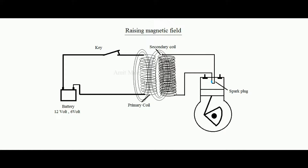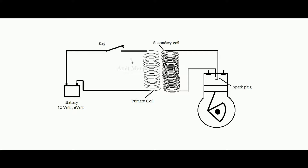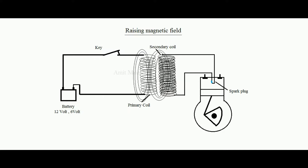Initially when the key was open there was no magnetic field, but when key K is pressed the magnetic field rises from zero to maximum. This changing magnetic field is linked with the secondary coil, which contains a larger number of turns.